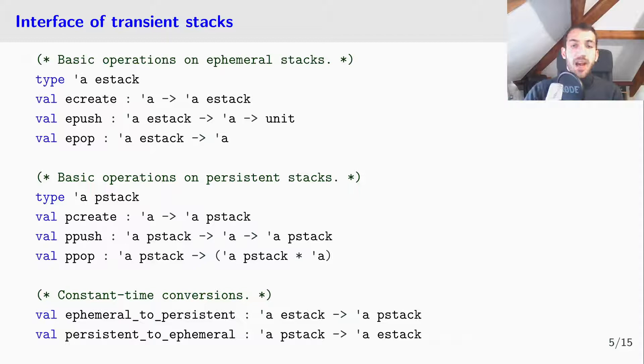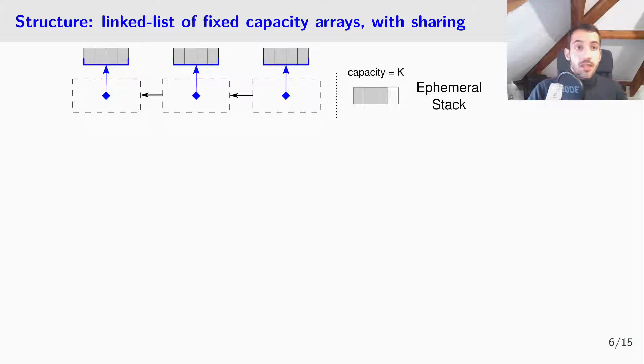But how is this possible? At a higher level, a transient stack is just a linked list of fixed capacity arrays. More precisely, here is an ephemeral stack which consists of a list of chunks. The head chunk here is of capacity equals k equals 4, with three taken slots and one empty slot.